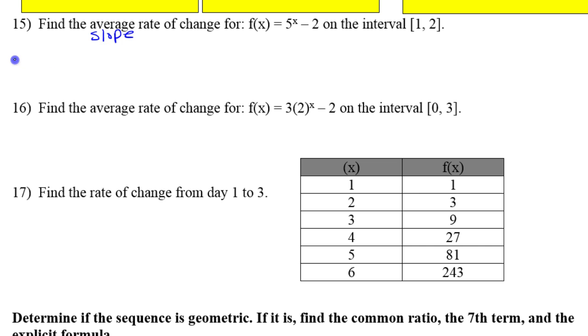And for that reason, when we calculate the average rate of change, ROC, we will wind up using the slope formula, which is y₂ minus y₁ over x₂ minus x₁.